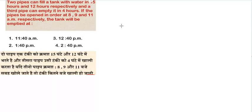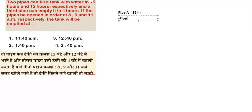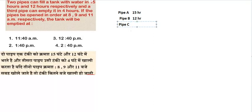We have pipe A with filling capacity of 15 hours, pipe B with filling capacity of 12 hours, and pipe C which is the emptying pipe taking 4 hours. Since pipe C is emptying the tank, it will go negative.